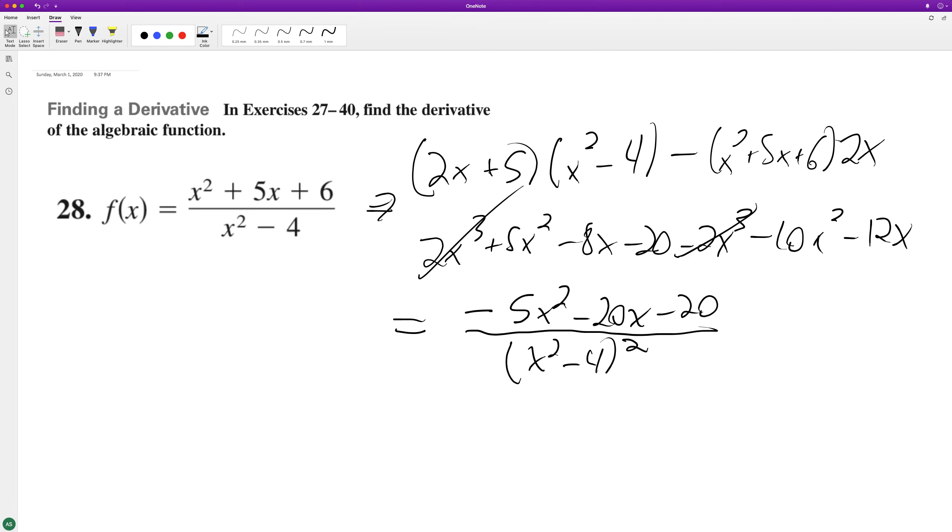All right. We could leave it like this. The other thing we can do is factor out a negative 5 and we get x plus 2 squared over, and this can be broken down to x squared minus 2 squared and x plus 2 squared.